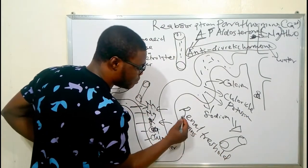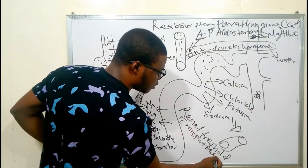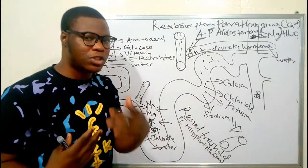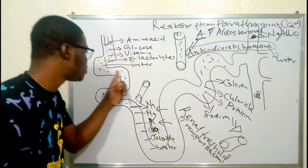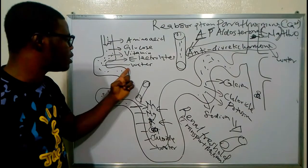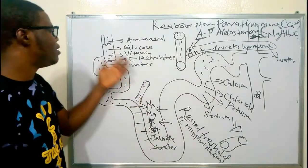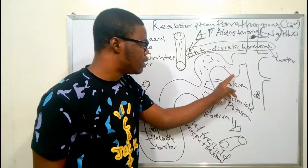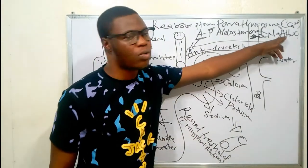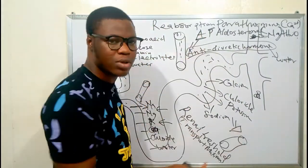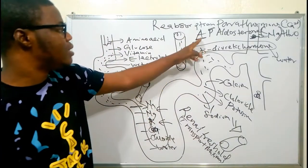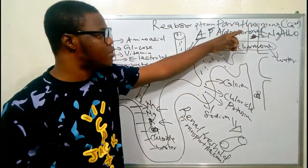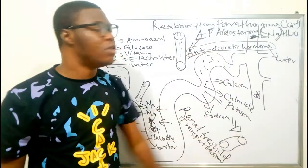The maximum capacity of the kidney to reabsorb is called the renal threshold, also known as transport maximum. Quick recap for reabsorption: the proximal convoluted tubule is the major site; the loop of Henle reabsorbs sodium, magnesium, potassium, calcium, chloride, and water; the distal convoluted tubule reabsorbs sodium, chloride, potassium, and calcium; the collecting duct reabsorbs sodium and water. Three hormones — ADH (water), parathyroid hormone (calcium), and aldosterone (sodium) — also contribute.